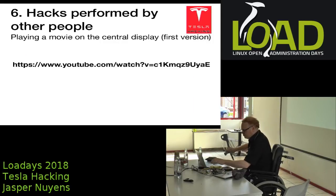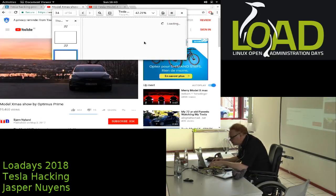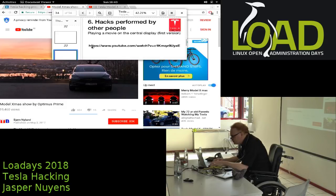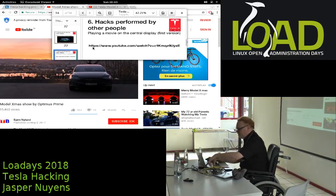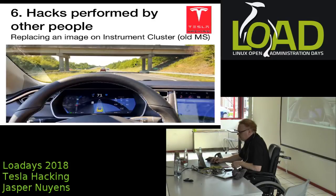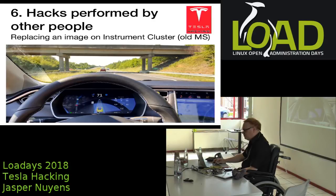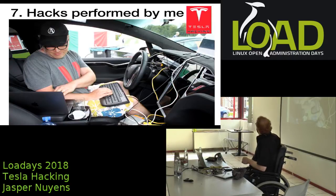Other hacks by other people: on an old Model S instrument cluster, the car image was replaced by a Batmobile. On the central display, someone played a movie. There's also a hack where the car image was replaced with a yellow car - the actual car was wrapped in yellow, which is not a color Tesla offers. The ethernet port below the CID is now only enabled through cryptographic signing.